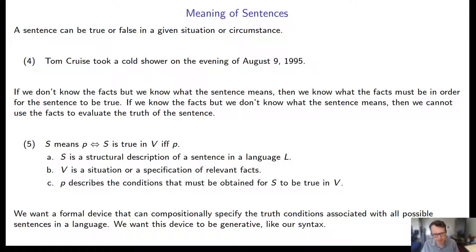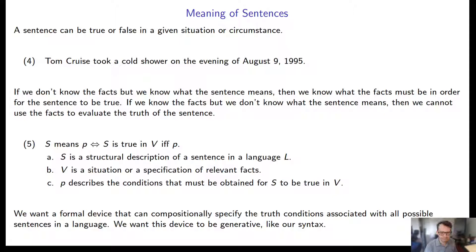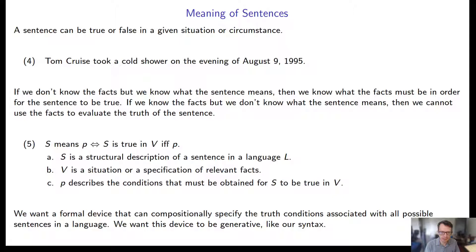Usually we're not working with specific situations — we look at a general case because we don't know all the facts. For example, 'Tom Cruise took a cold shower on the evening of August 9th, 1995' — we don't know if this is true, but we can talk about what we'd need to know for it to be true. This is more practical because we can discuss truth conditions without knowing the real-world facts. If we know what the sentence means, we can verify it once we have the facts. But if we don't know the sentence's meaning, the facts are useless.